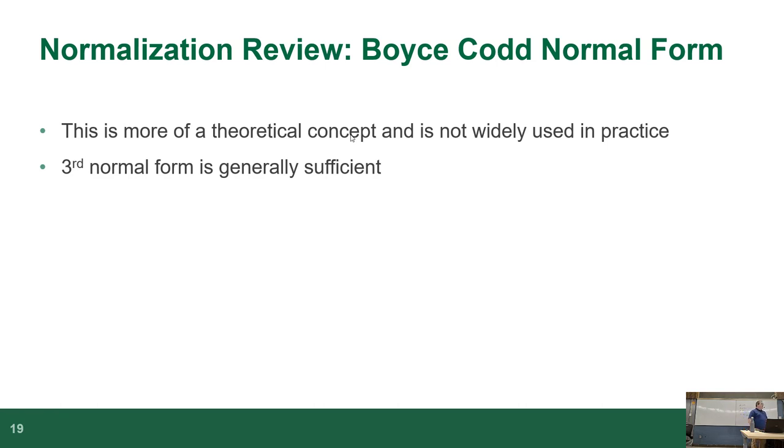And Boyce-Codd for all the fun that we had discussing it, literally it summarizes as follows. This is more of a theoretical concept and it's not widely used in practice. Usually third normal form is more than good enough. Yeah. That literally, that's all you need to know about Boyce-Codd. It exists. It does have a place and normally it rarely ever happens unless the data you're being given is really stupid. Boyce-Codd is there to handle a very specific, what they call an edge case. As in the data looks a certain way and behaves a certain way. And it only behaves that way with that set of data. That means you need to do these special steps to clean it up.